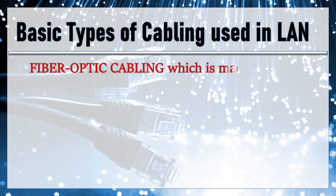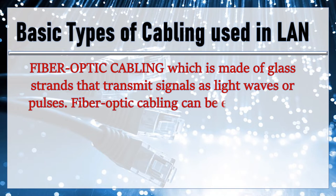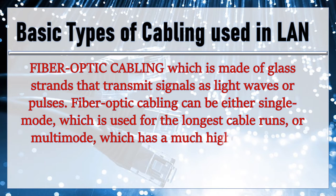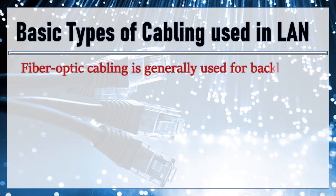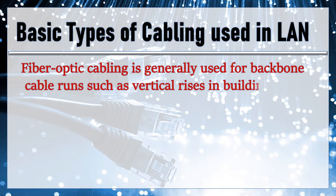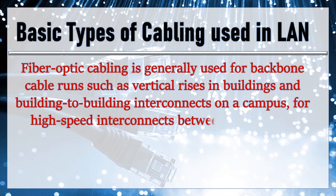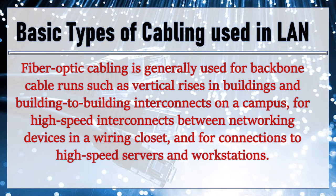The second type is fiber optic cabling, which is made of glass strands that transmit signals as light waves or pulses. Fiber optic cabling can be either single mode, used for the longest cable runs, or multi-mode, which has a much higher carrying capacity. Fiber optic cabling is generally used for backbone cable runs such as vertical rises in buildings and building-to-building interconnects on a campus, for high-speed interconnects between networking devices in a wiring closet, and for connections to high-speed servers and workstations.